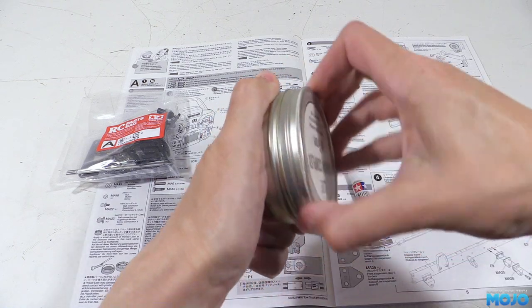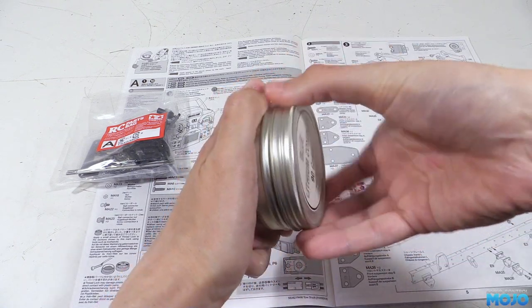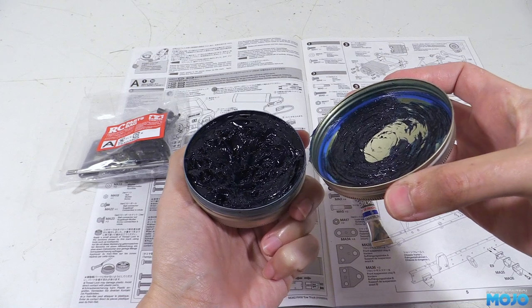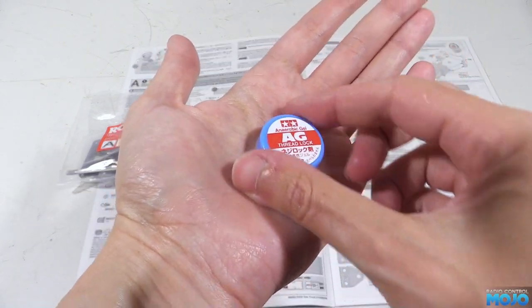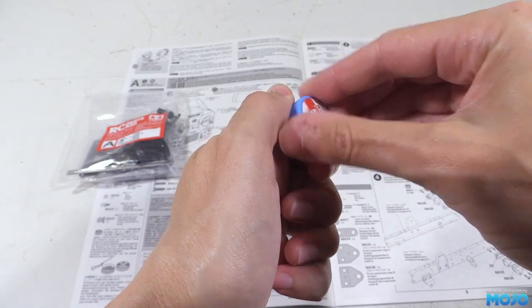The threadlock the kit comes with is Tamiya's gel. It works just fine and is fairly plastic friendly if you accidentally overdo it.